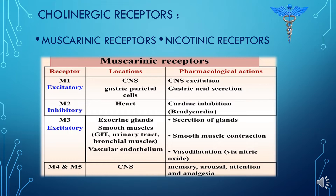If acetylcholine binds with the M2 receptor, which is present in the heart, it will induce bradycardia — a slow heart rate. M3 is also excitatory in nature and will stimulate exocrine gland secretions, smooth muscle contraction, and vascular endothelial cell dilation.